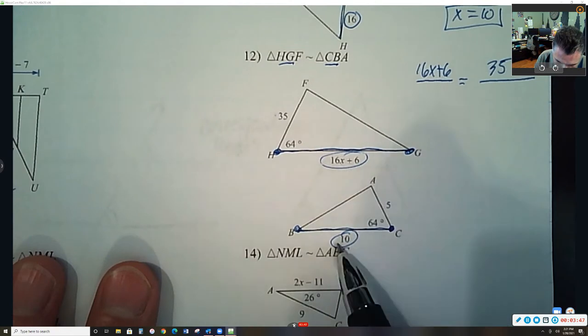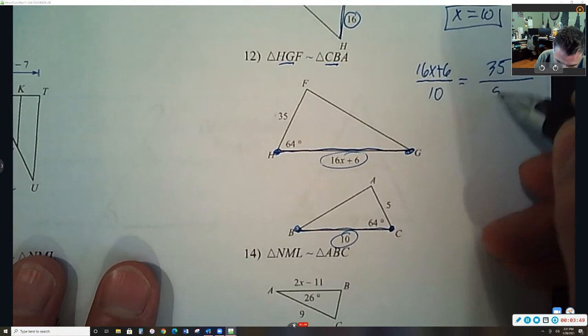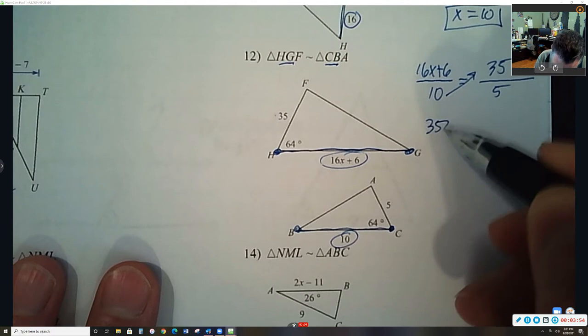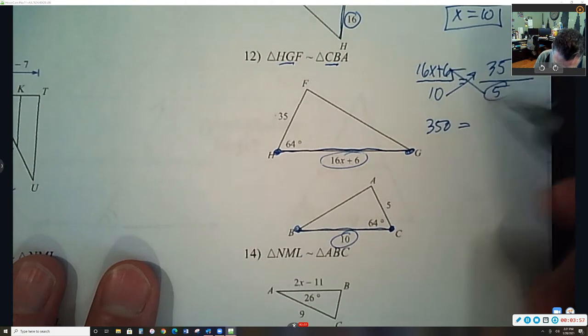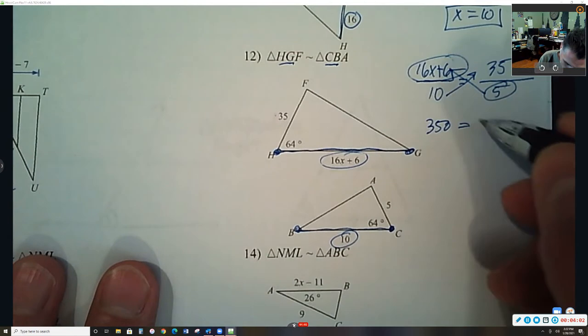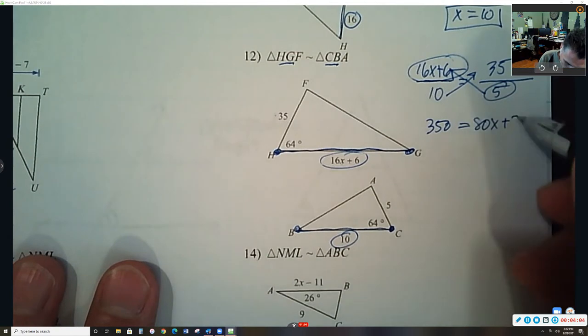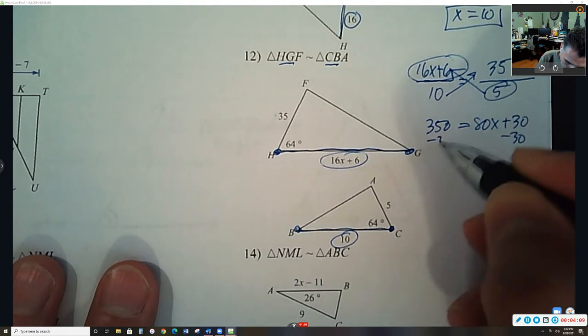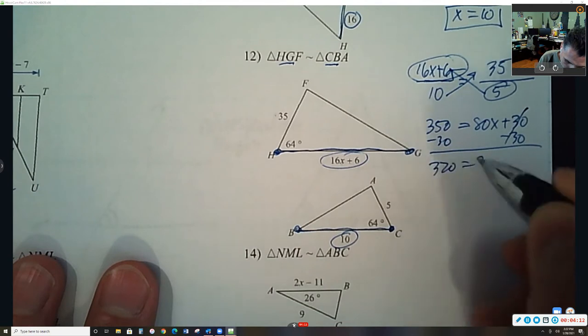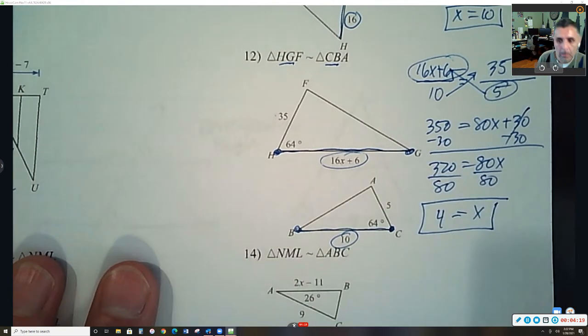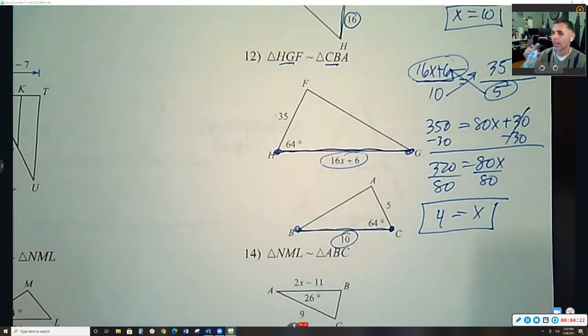Cross multiply. Cross multiply. Be careful with 5 times both of those. So this is 80x plus 30, subtract 30, divide by 80, x equals 4. Pause that, let's move on.